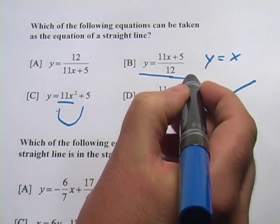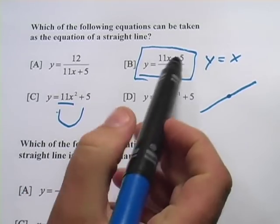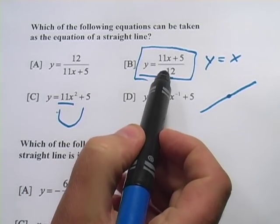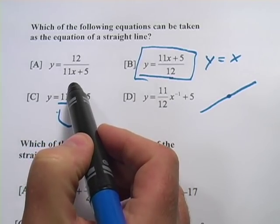So our correct answer here is this one. I know it can get a little confusing with the fractions, but x needs to be to the first power. If it's in the top of the fraction, okay. If it's in the bottom of the fraction, you know it's to a negative power.